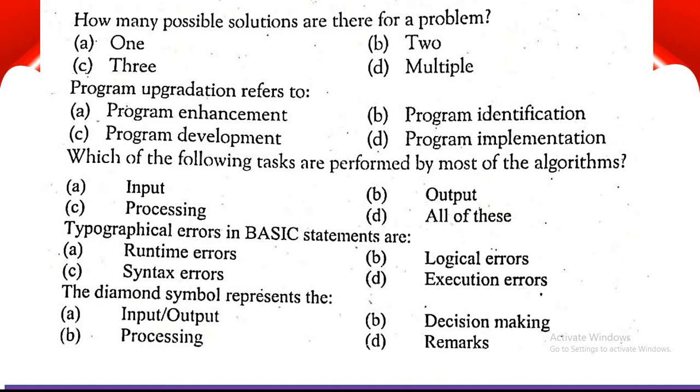Next MCQ is: The diamond symbol represents: option A input/output, option B decision making, option C processing, and option D remarks.